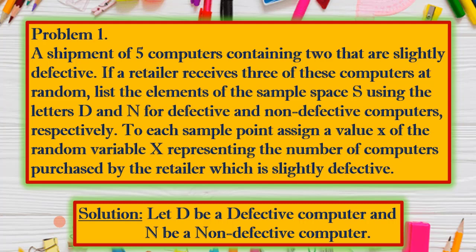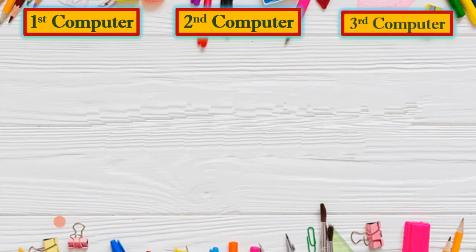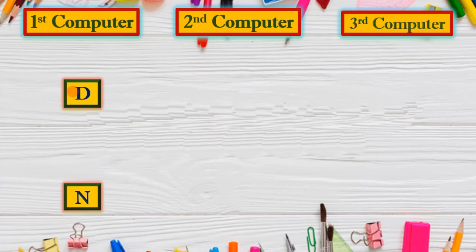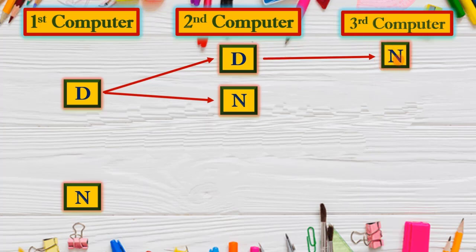For the solution, let capital D be a defective computer and N be a non-defective computer. We draw a three-column tree diagram representing the first, second, and third computer. On the first computer there are two possibilities: either D or N. Given D on the first computer, there are two possibilities on the second: D or N. However, the third computer is forced to be N because the first two are already defective, and the problem states there are only two slightly defective computers — so a triple-D outcome is not possible.